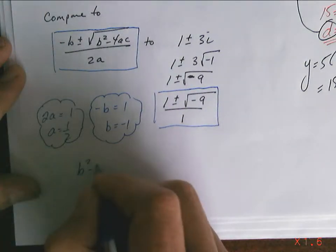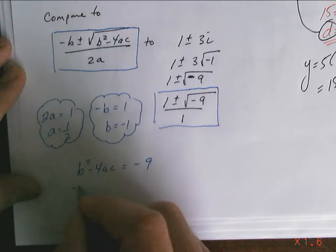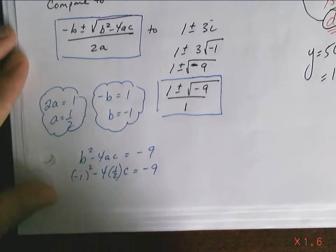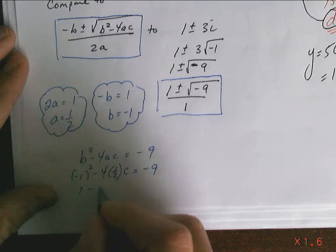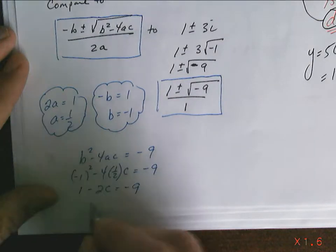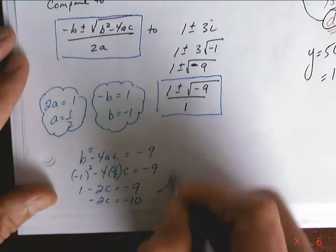b squared minus 4ac equals negative 9. Negative 1 squared minus 4 times 1 half times c equals negative 9. 1 minus 2c equals negative 9. Negative 2c equals negative 10. c equals 5.